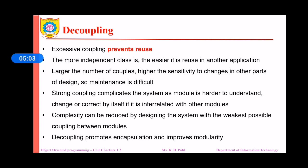Excessive coupling prevents reuse, and that is why decoupling or weak coupling must exist among classes or methods. The more independent the classes, the easier it is to reuse them in another application. A larger number of couplings results in higher sensitivity to changes in other parts of the design, making maintenance difficult. If changes are made to one class, all other classes connected to it may get affected, so the number of couplings should be kept minimal.